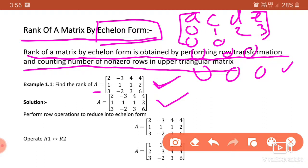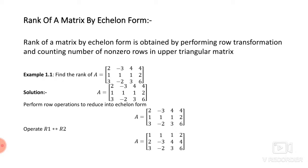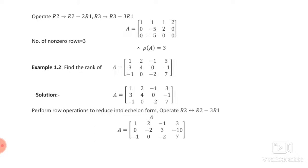We take the given matrix and try to reduce it as much as possible into echelon form by performing row transformations. First, we operate R1 interchange R2. After interchanging, we get [1 1 1 1 2] in the first row, [2 -3 4 4] in the second row, and [3 -2 3 6] in the last row.